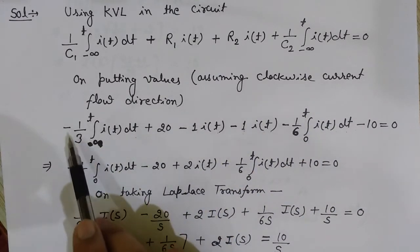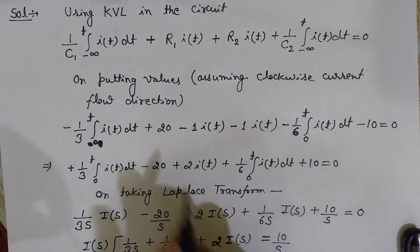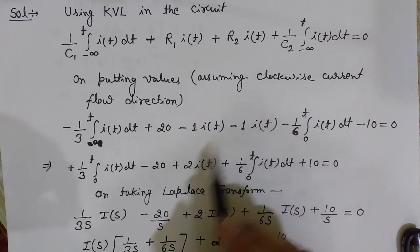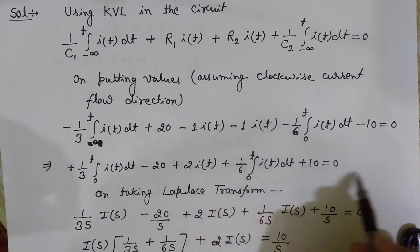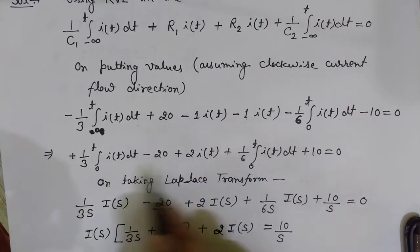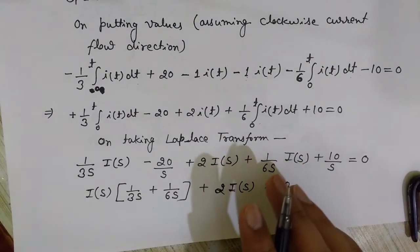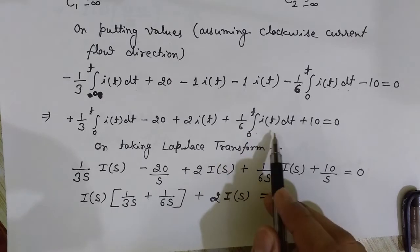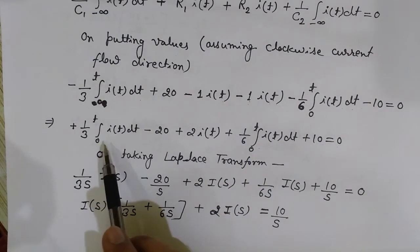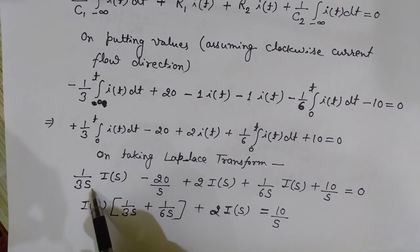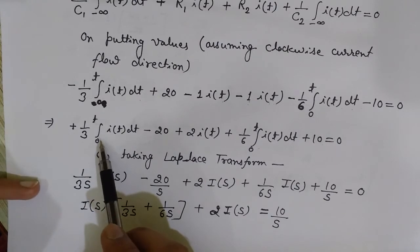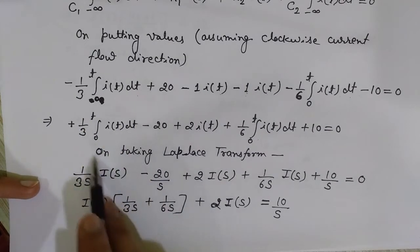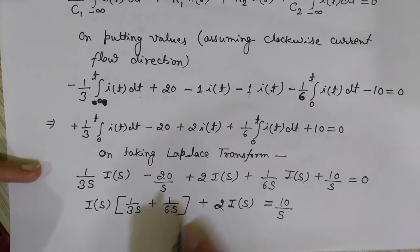After changing all signs, the equation is simplified. Now I will take the Laplace transform to convert it to the S-domain and get rid of the integral expressions. The Laplace transform of an integral (from 0 to t of I(t) dt) is I(s)/s. Constant terms transform as the constant divided by s.